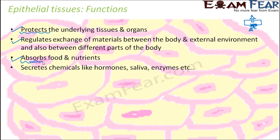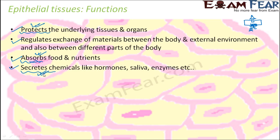Epithelial tissues also secrete chemicals like hormones, saliva, and enzymes. The salivary gland secretes saliva, which plays an important role in the process of digestion. Hormones play many roles inside our body. So basically, when you talk about the functions of epithelial tissues, there are three major functions: protection, absorption, and secretion.